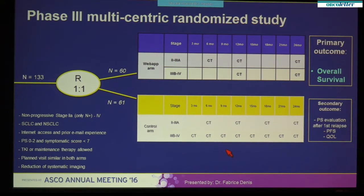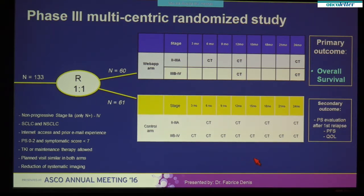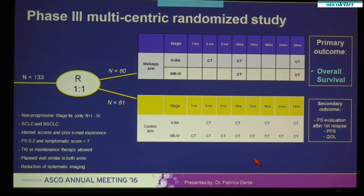TKI or maintenance therapy were allowed. Planned monitoring visit frequency was identical in both groups, every three months or more. Planned CT scans were performed every three to six months according to cancer stage in the control arm. Additional CT scans could be performed at investigator discretion at any time in both arms. In the experimental arm, the planned CT scans were performed every six to twelve months only according to cancer stage, but an anticipated visit and imaging was performed following web application notification suggested by the algorithm.